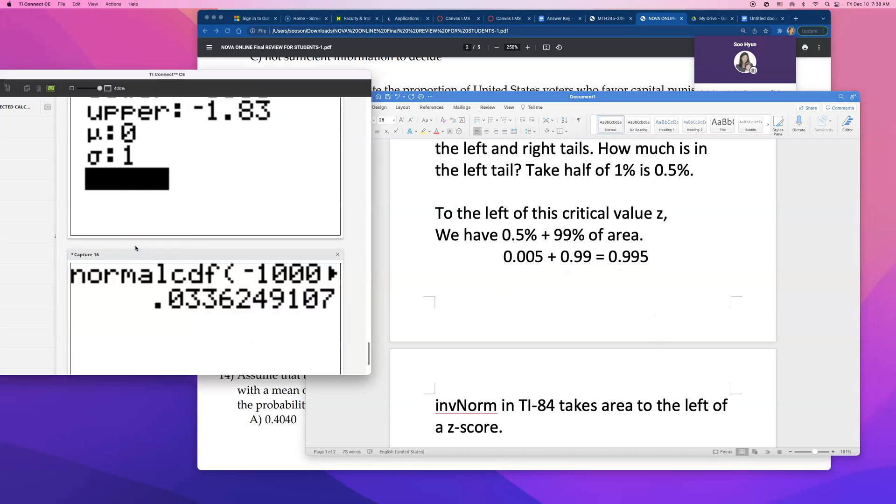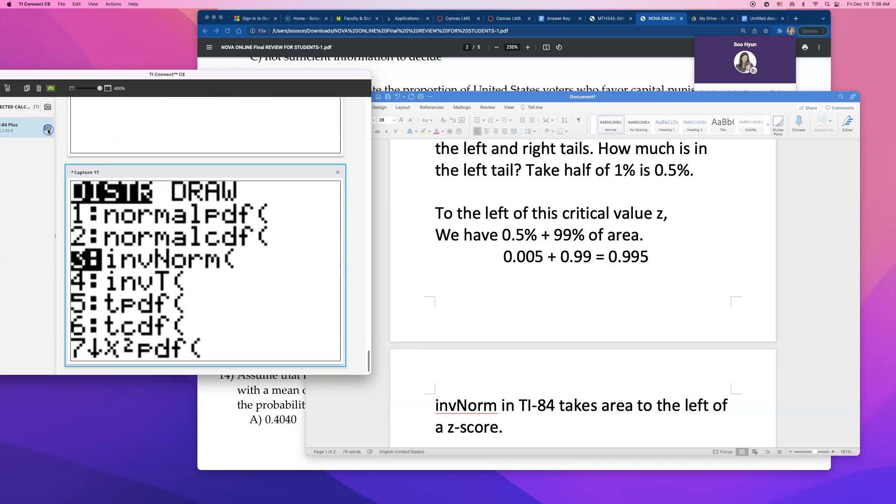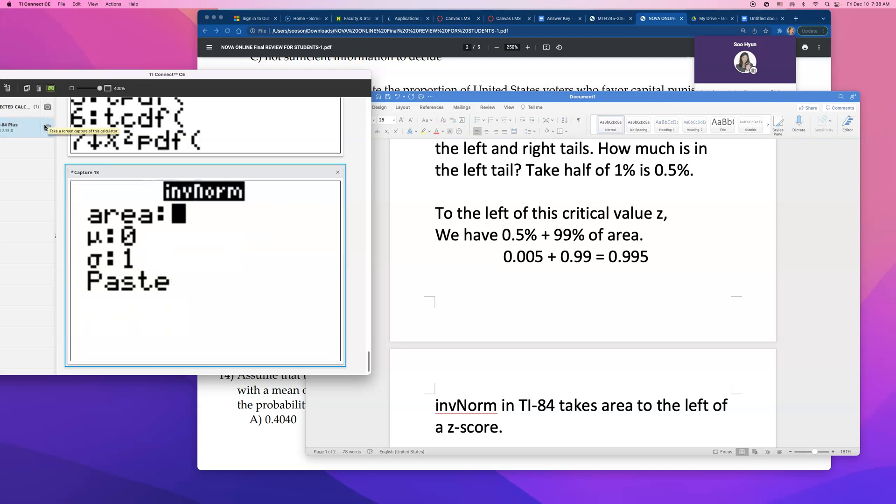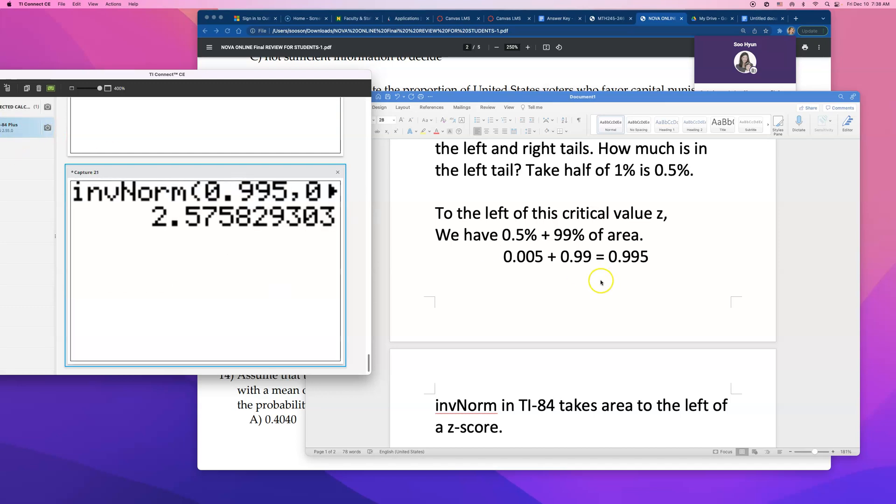So, take a look at the inverse norm function here. On my calculator, I will go to second vars, but this time, I will open up the third menu called inverse norm. What I'm going to tell them is that the area to the left of this critical value is 0.995, and everything else remains the same. Mean is 0, standard deviation is 1. That's all you have to do. Go and hit paste, and hit enter.